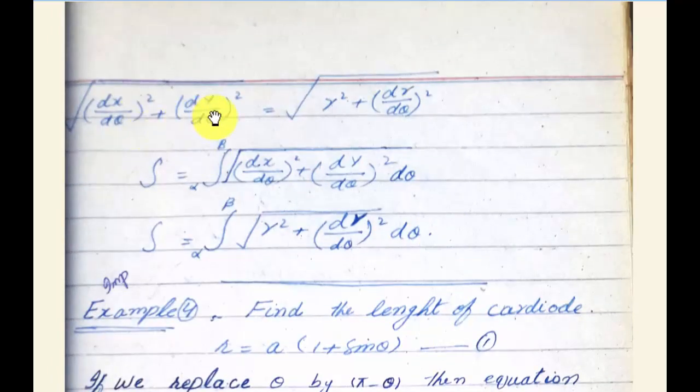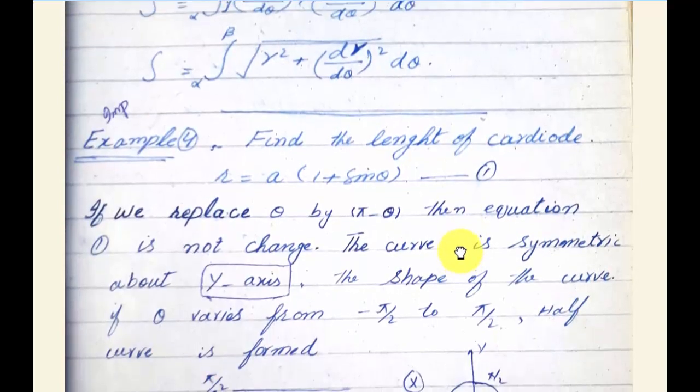Therefore, the arc length is S = integral from α to β of √(r² + (dr/dθ)²) dθ. This is the arc length formula in polar coordinates.